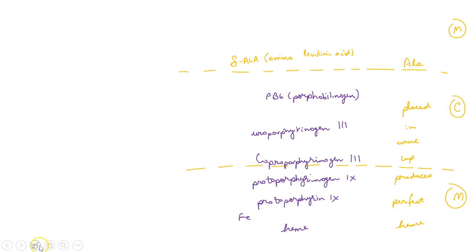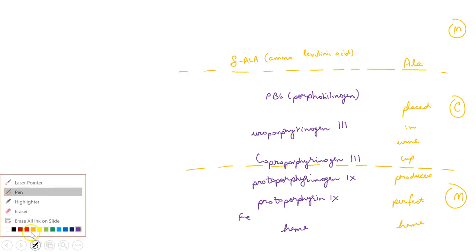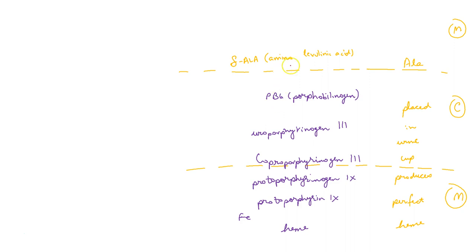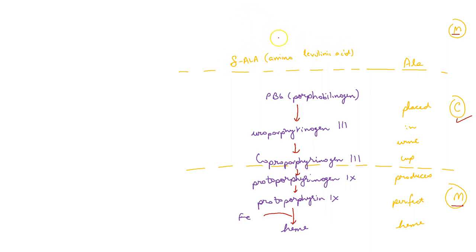So these are the steps of heme synthesis. Only the last three and the first one occur in the mitochondria, whereas the others occur in the cytosol. The first step is the synthesis of delta-aminolevulinic acid.